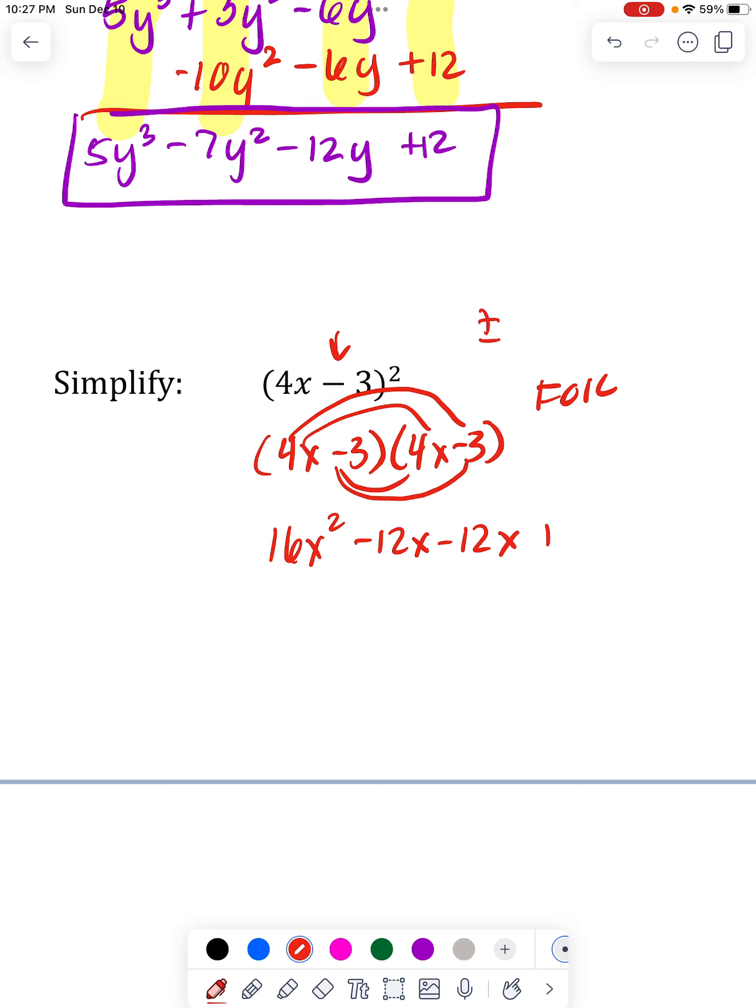And here, the negatives cancel into a plus 9. So even though these didn't cancel, they will combine. So -12 minus 12 more puts me at -24x's and then plus 9.